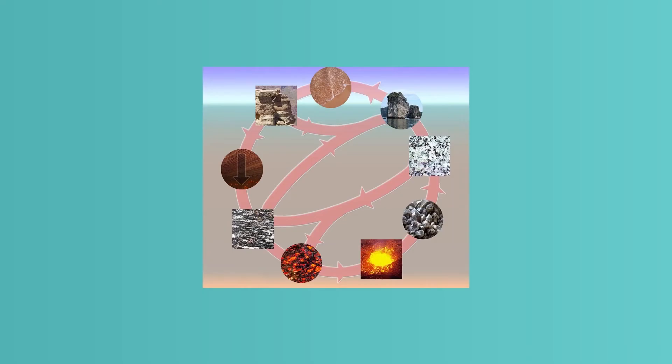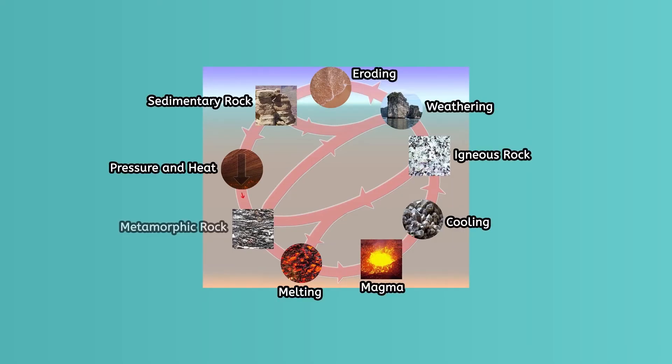So this entire process of melting, cooling, weathering and eroding, pressure and heat, compacting and cementing, and melting again is called, you guessed it, the rock cycle. This cycle goes on and on and never ends.